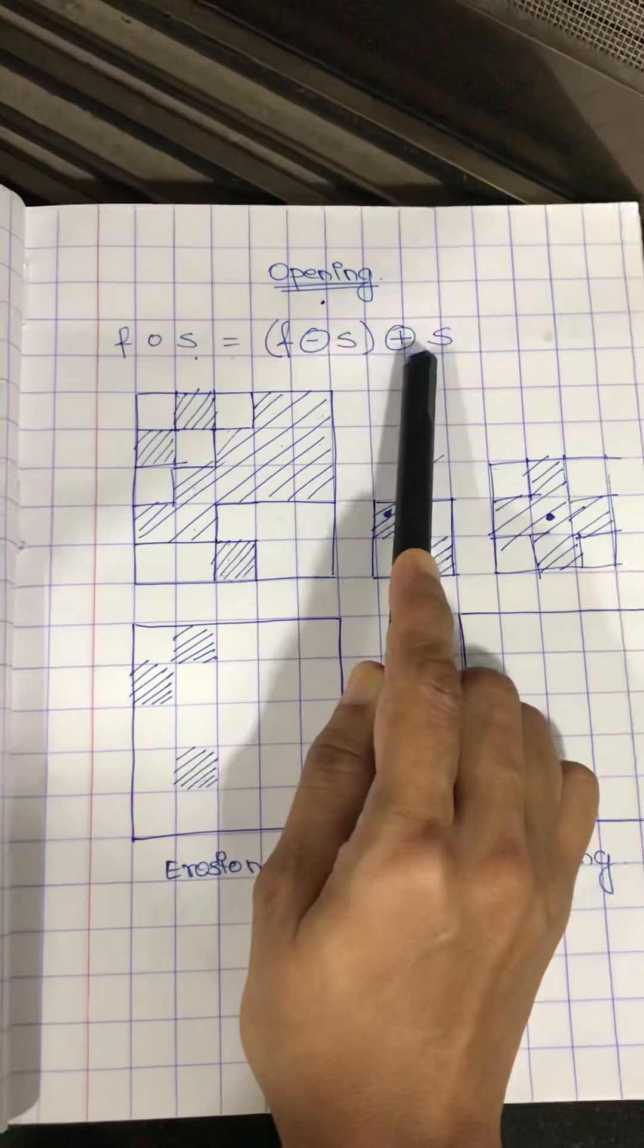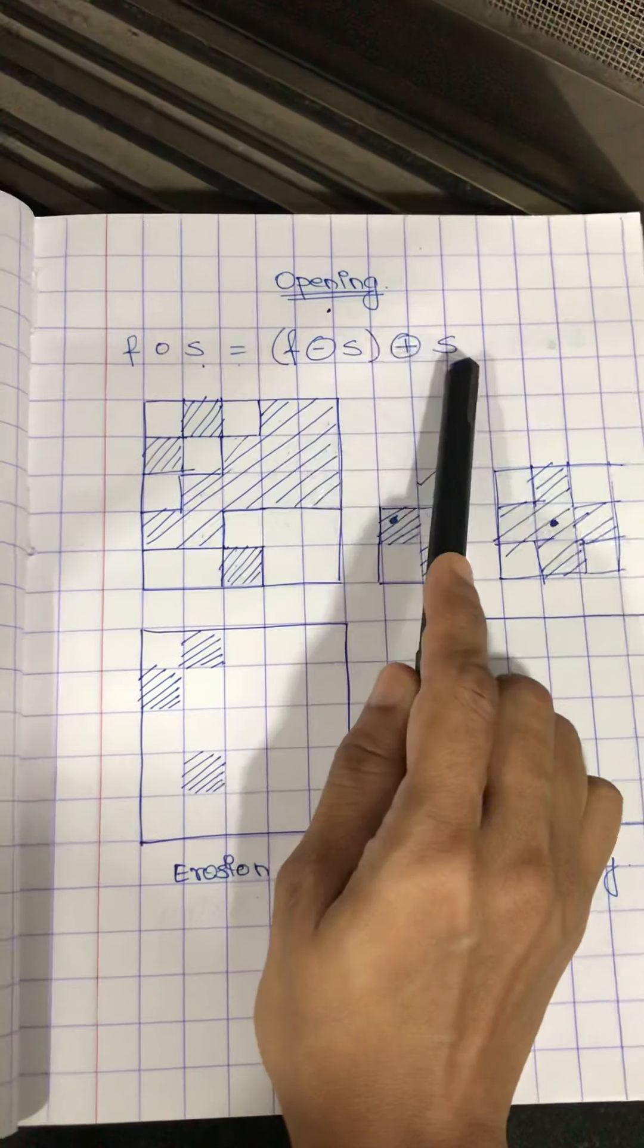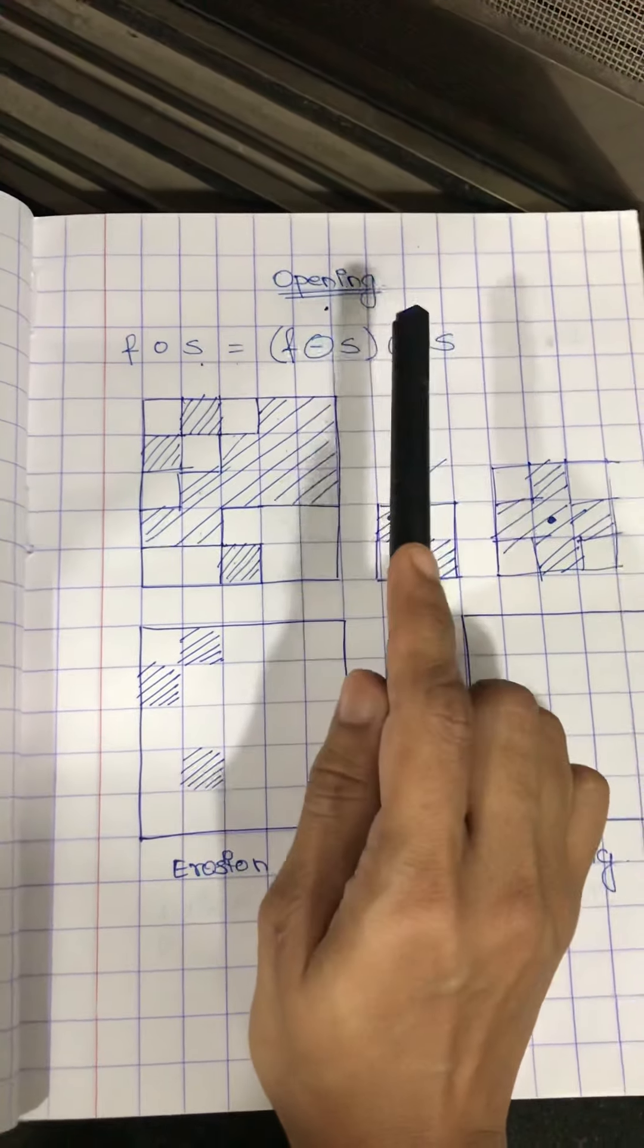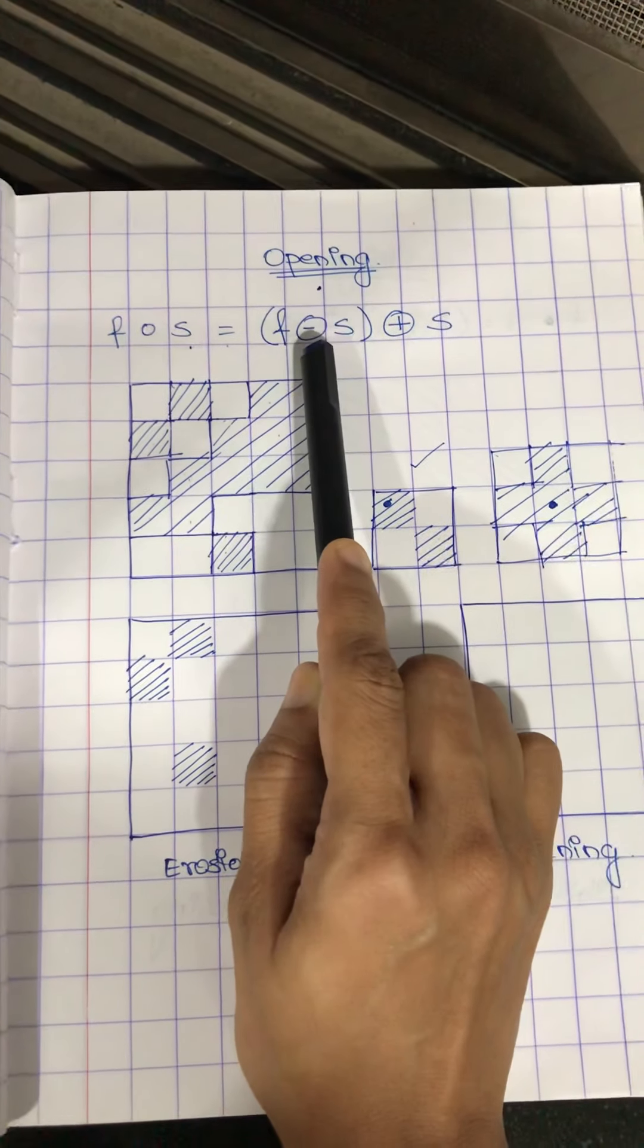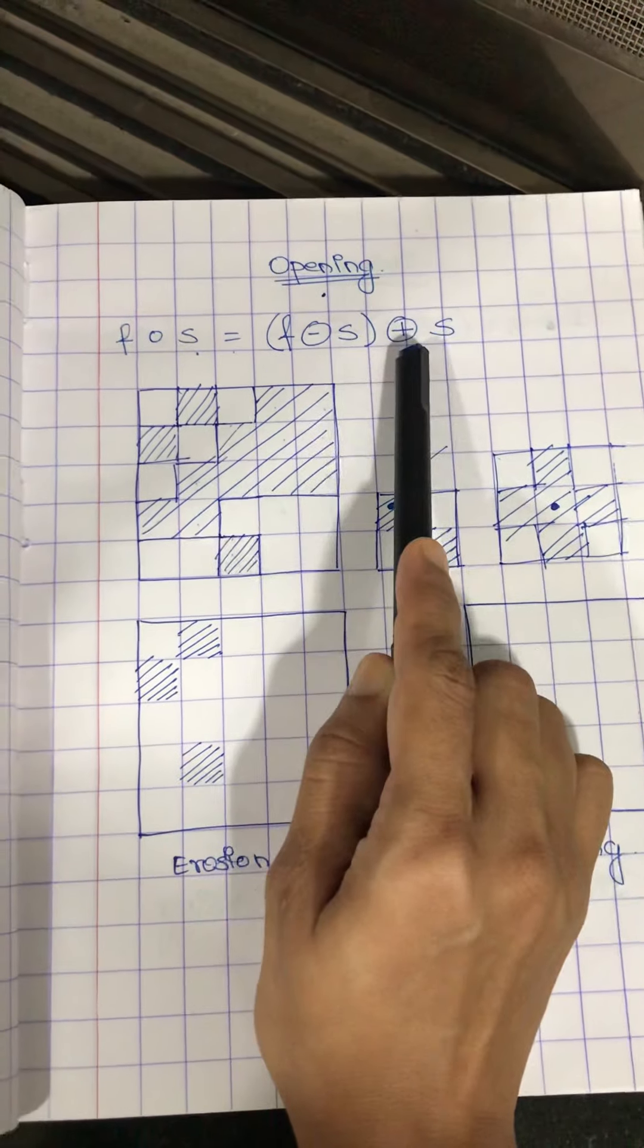So you cannot interchange the sequence, you cannot interchange the structuring elements, although both the structuring elements are going to be the same. So it has to be compulsorily first erosion and then dilation for opening.